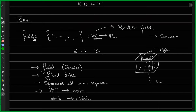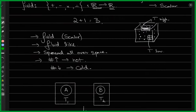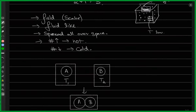We talked about fields — what are fields — and the idea of fields in mathematics, and how we can apply that idea to physics. For us, it's enough to know that a field is something where you can assign a value at every point in space, and that something is called a field. A temperature field means you can assign a value of temperature at every point in space. We were also talking about the equilibrium state of two or more systems.